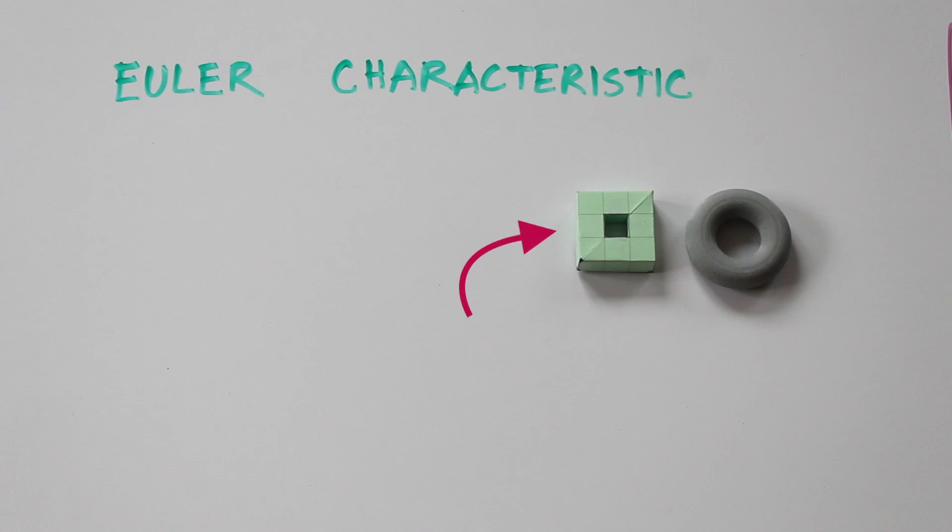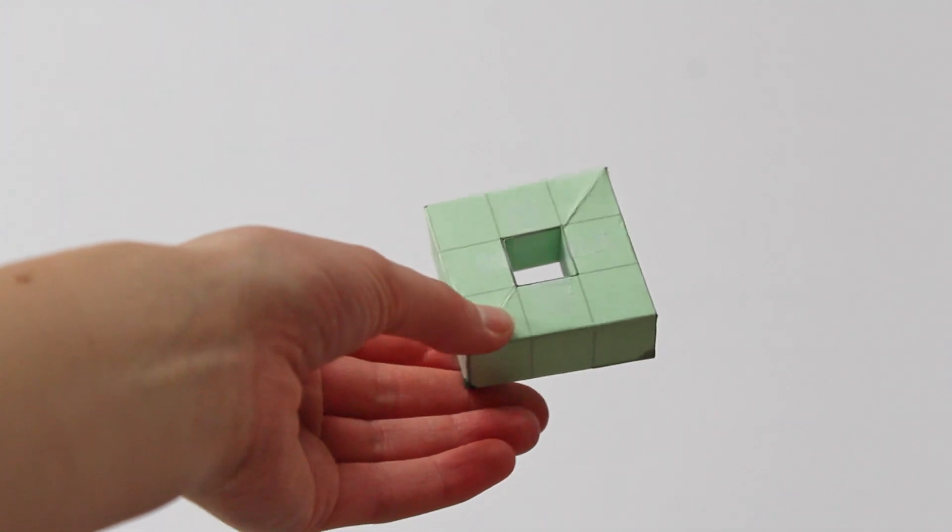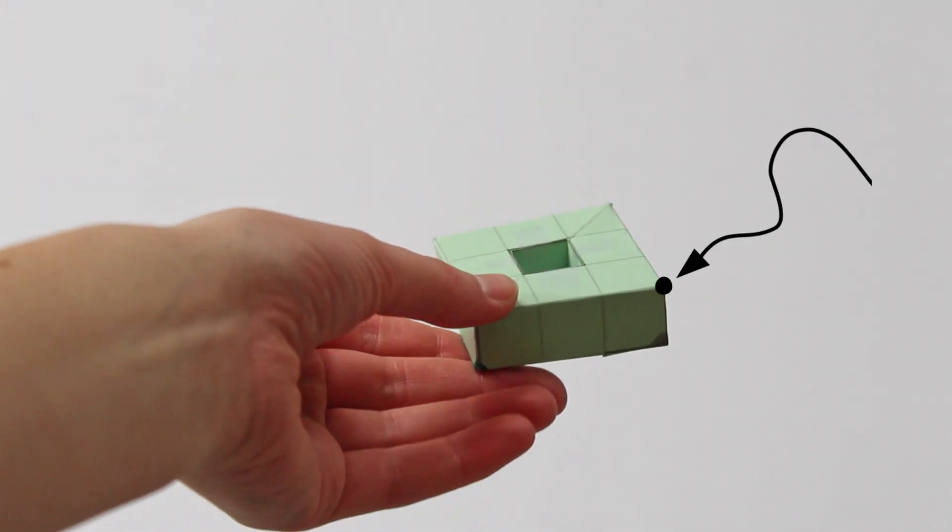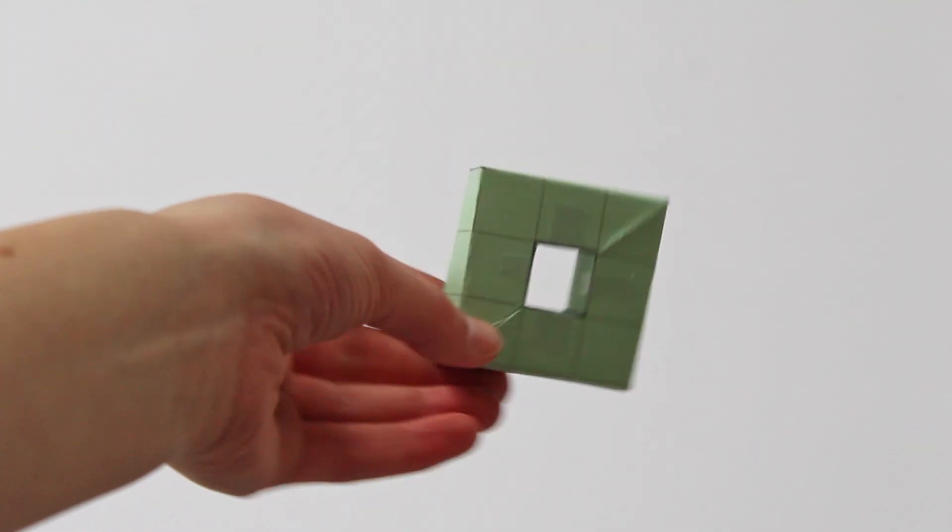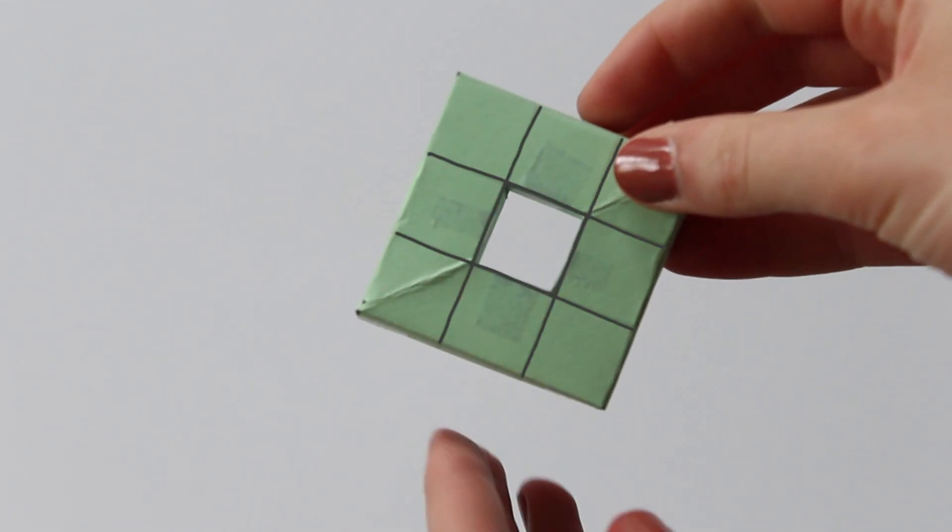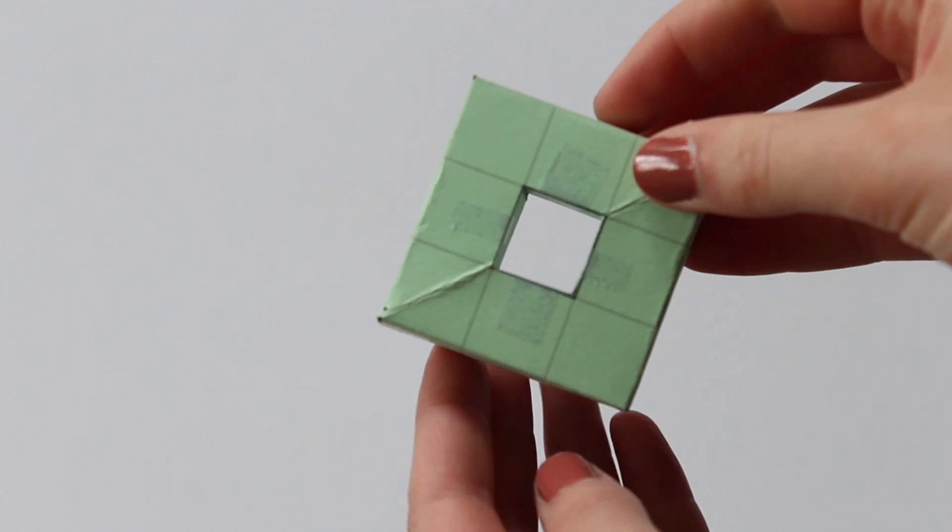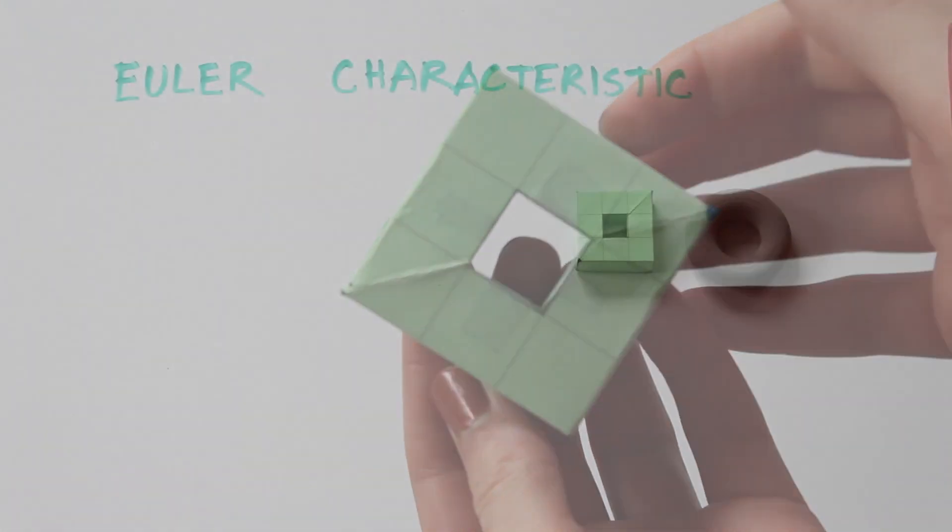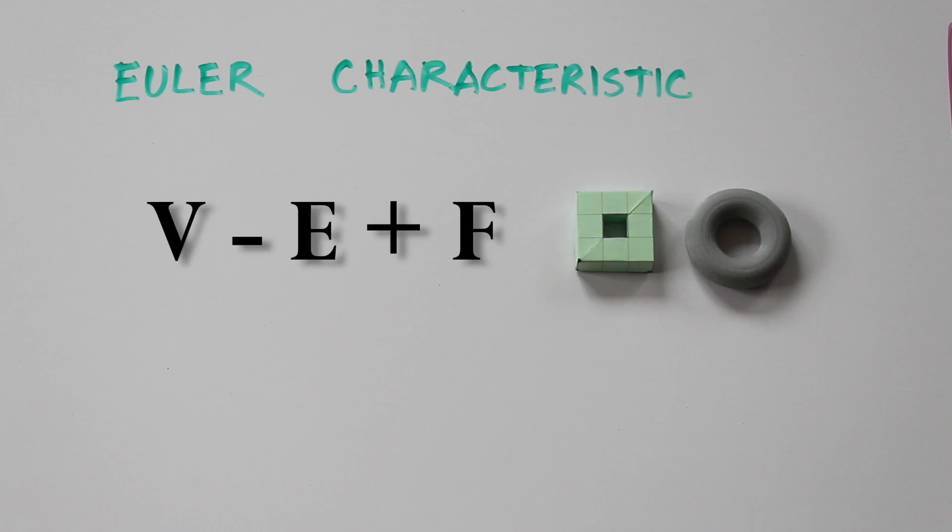This little guy is a torus divided into polygons. Notice that some of the vertices, like this one, stick out, while some of the vertices, like this one, are flush with the surface of the shape. When we're counting the vertices, edges, and faces of this model, we want to pay attention to the lines on its surface so that we can count the hidden vertices, edges, and faces. Now we can use V minus E plus F to determine the Euler characteristic of the torus.